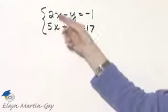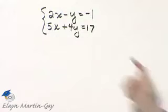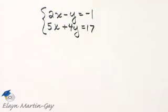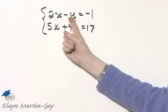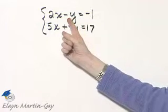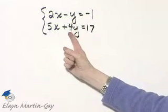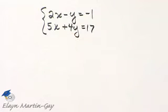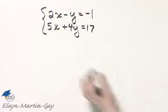I want to multiply one or both equations so that the coefficients of the x's are opposites of each other or the coefficients of the y's. Now notice, if I multiply the first equation by 4, this coefficient is negative 4, this coefficient is 4, and I do have opposites of each other. So let's do that.